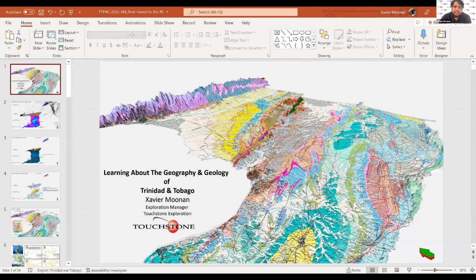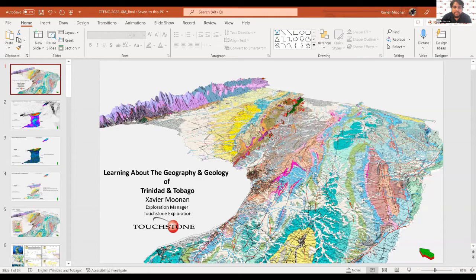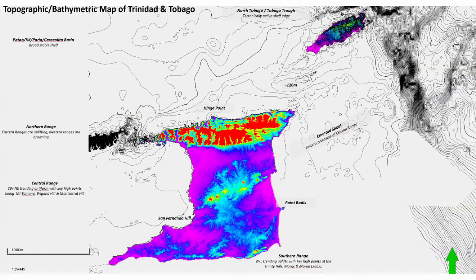Geologists look at the rocks present in an area — the rocks making up the mountains and valleys — and try to put an age to them, picturing what the world, or in our case our islands, looked like at that point in time. That's why I like the Geological Society of Trinidad and Tobago's slogan: 'The present is the key to the past.' We look at what we have today to understand what may have occurred in the past.